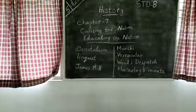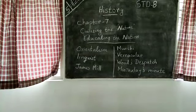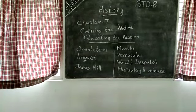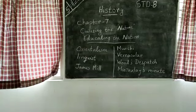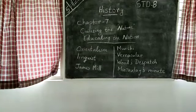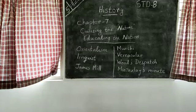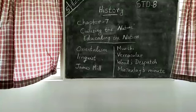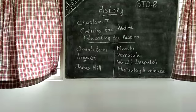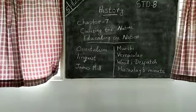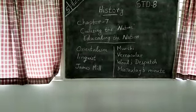Jones set up the Asiatic Society of Bengal and started a journal called Asiatic Researches. Jones and Colebrooke went about discovering ancient texts, understanding their meaning, translating them, and making their findings known to others. This would also help Indians to rediscover their own heritage and understand the lost glories of their past.